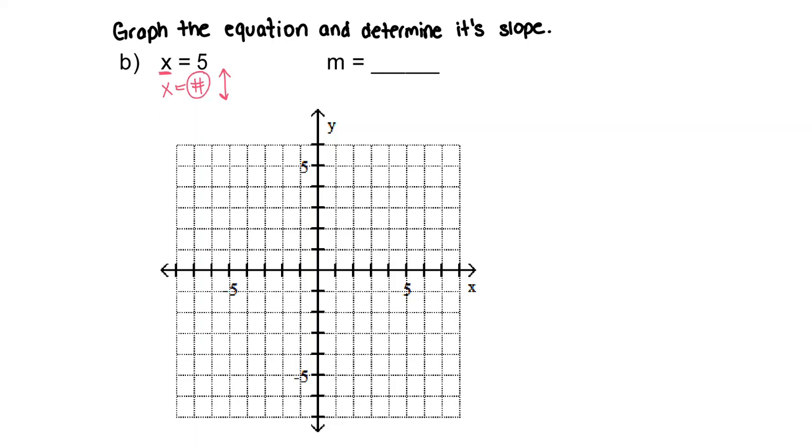So we're going to look at where x equals 5 on the graph, specifically on the x-axis, and that is right here. And that is going to be all throughout this vertical line. Okay? And that is our line.